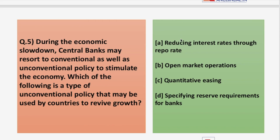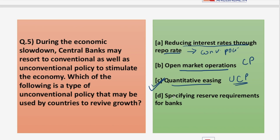To answer the fifth question: option A — reducing interest rates through repo rate — is a conventional policy. Option B — open market operations — is also a conventional policy instrument. Option C — quantitative easing — is an unconventional policy, so the answer is option C. Option D — specifying reserve requirements for banks (CRR/SLR) — is also conventional. With this, we have completed five finance questions. Do ask queries in the comment section, and subscribe to our channel for related videos.